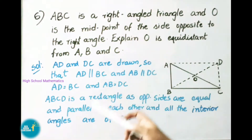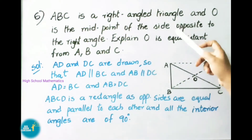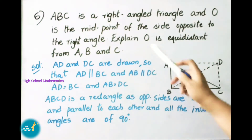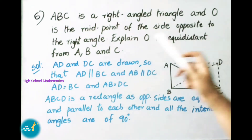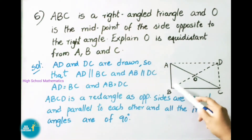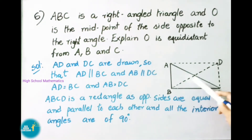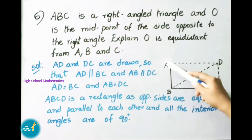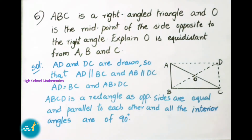Question number 6: ABC is a right angle triangle and O is the midpoint of the side opposite to the right angle. Explain that O is equidistant from A, B and C — that is, OA, OB and OC are all equal. We need to explain this from point O.